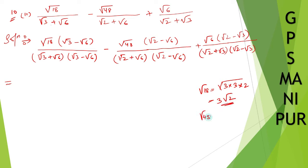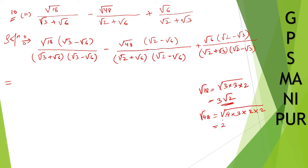And root over 48 — how can I write that? 48 is 4 into 4 into 3, which is 4 times 12, so root over 4 times 4 times 3. Root over 4 is 2, into 2, into root over 3, giving 4 root 3. So root 18 is replaced by 3 root 2 and root 48 is replaced by 4 root 3.